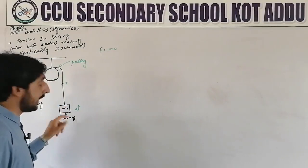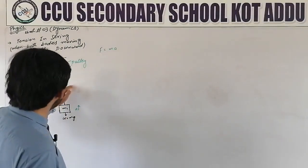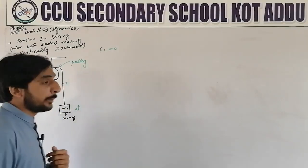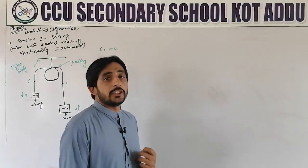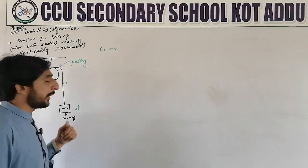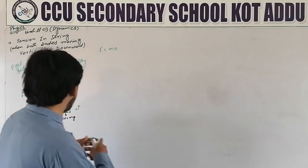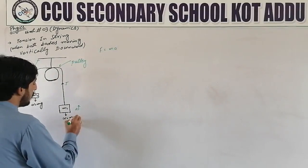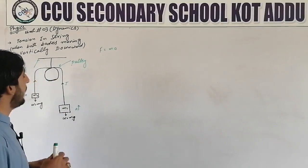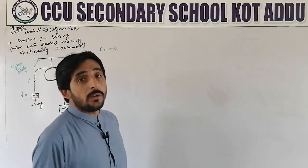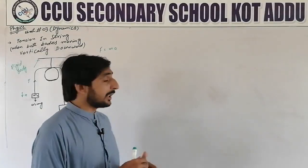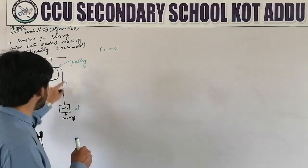For mass M1, there are two forces: one is weight (a downward force) and one is tension (also a force). Both are forces but their directions are opposite — weight acts downward and tension acts upward. The weight equation is W = mg, and for mass M1, W = m1g. Now for the net force, we sum all forces in the same direction.